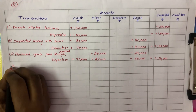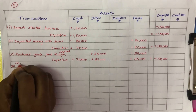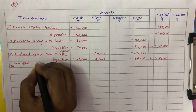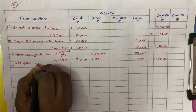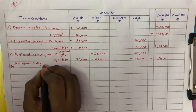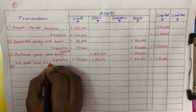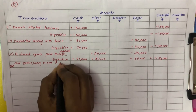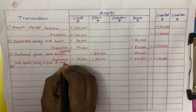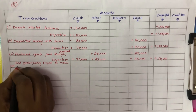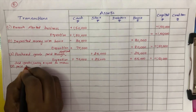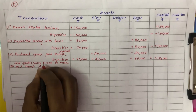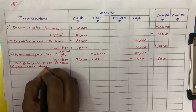Fourth transaction: sold goods costing Rs. 10,000 to Mohan for Rs. 14,000. Mohan pays through debit card, meaning payment goes directly into the bank account. Stock decreases by minus Rs. 10,000 and bank increases by plus Rs. 14,000.